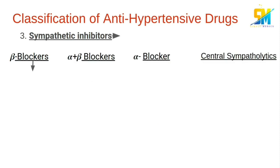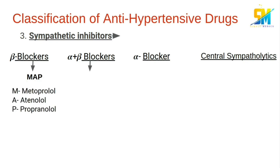We can remember the beta blockers by the mnemonic MAP: metoprolol, atenolol, and propranolol. Talking about alpha and beta blockers, we have labetalol and carvedilol.